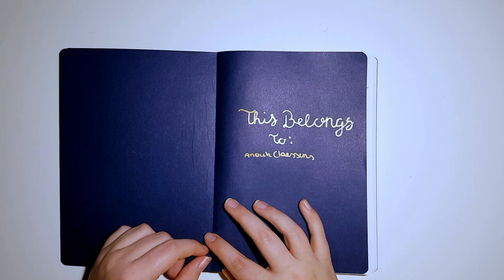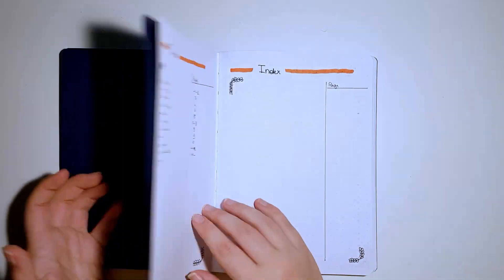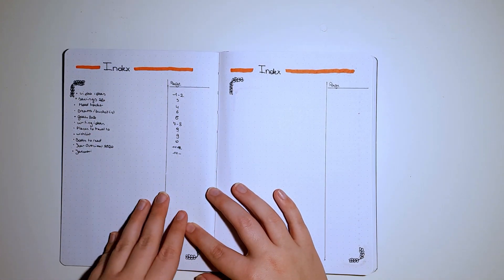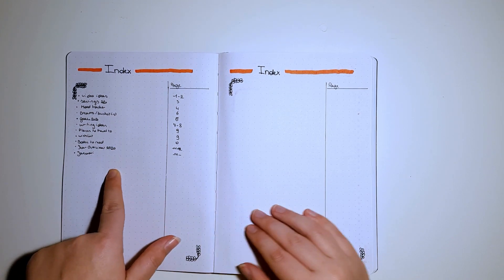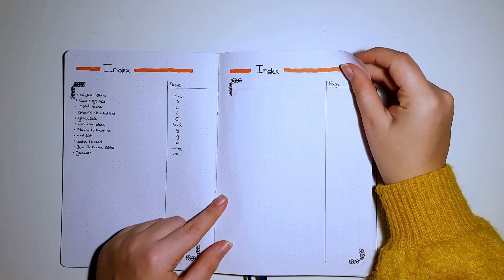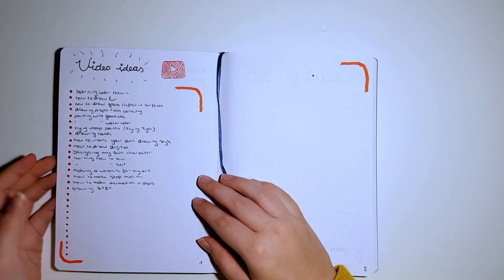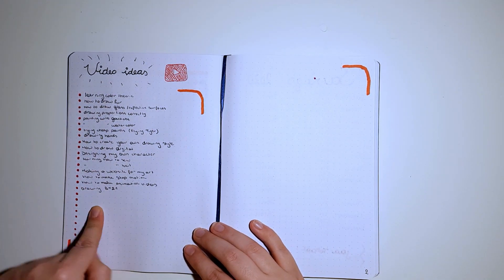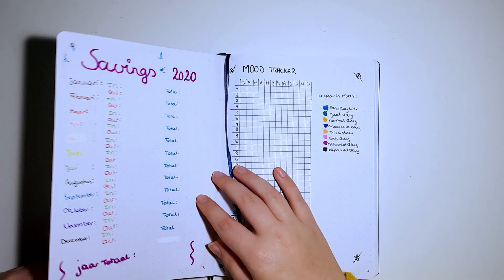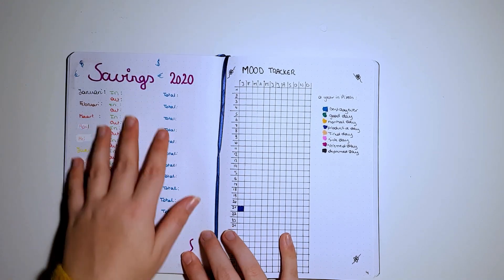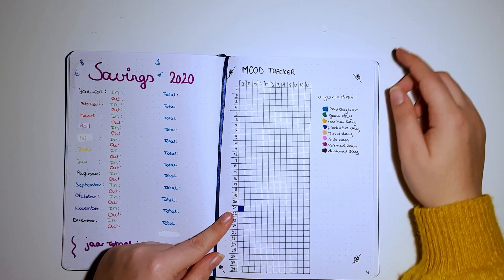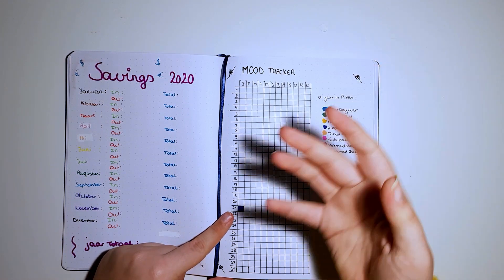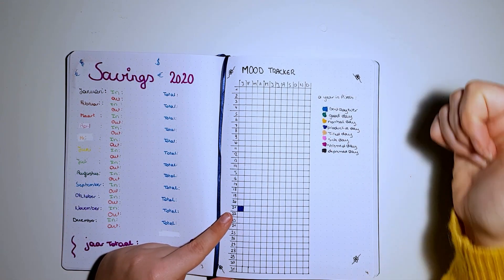So that was my first time trying bullet journaling. I thought it went pretty great. This is my index page filled up right now for how I have it. And I really liked it. Here I have, as I said, written down all my video ideas. I'm just going to skip over that. I haven't filled this one in. I did my first day, which was a very productive day because I filmed this. So good.